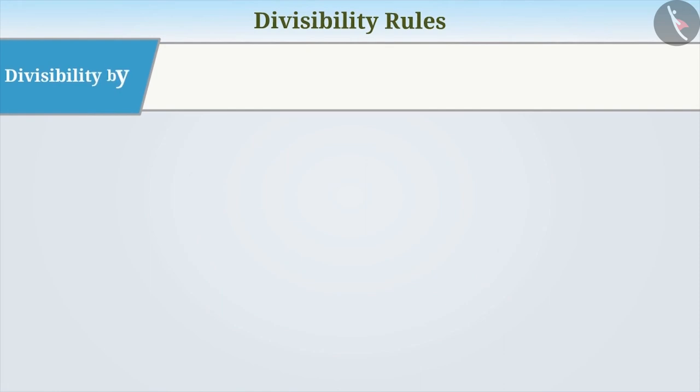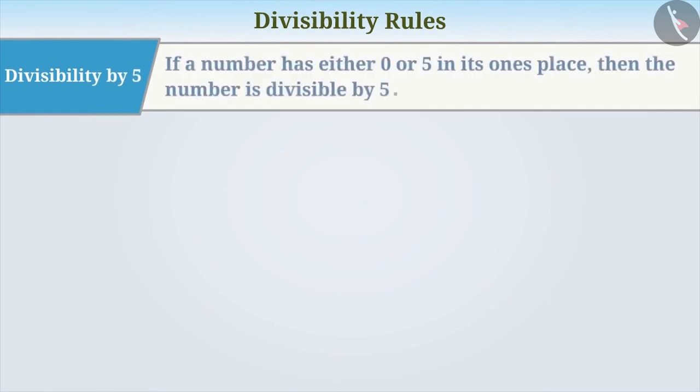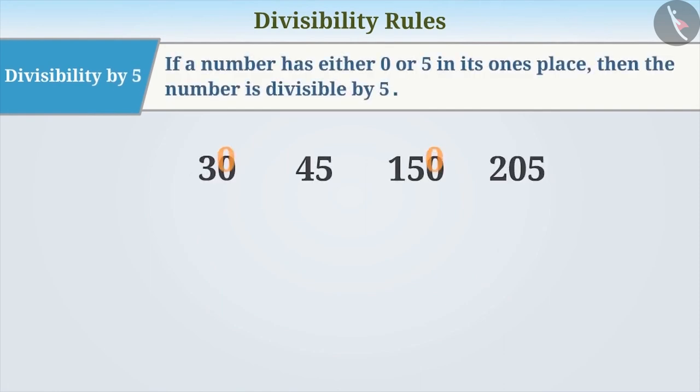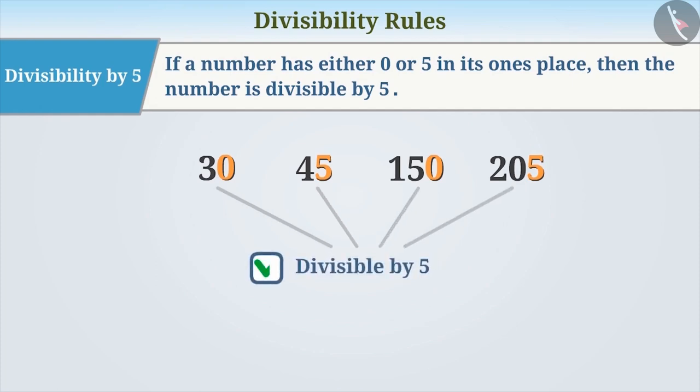Divisibility by 5: If a number has either 0 or 5 in its ones place, then the number is divisible by 5.